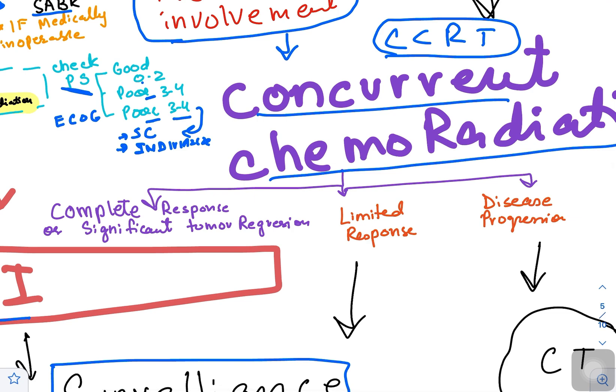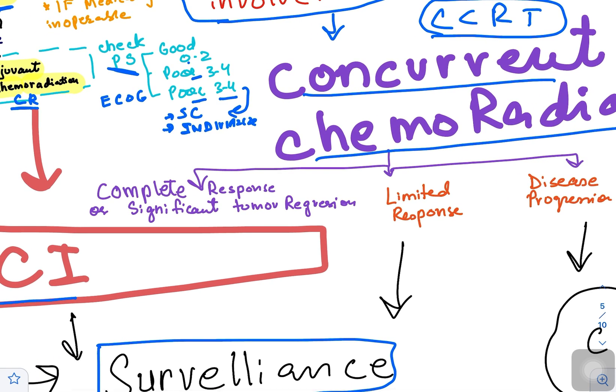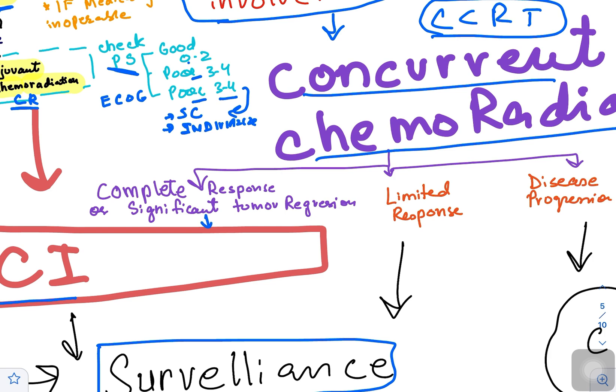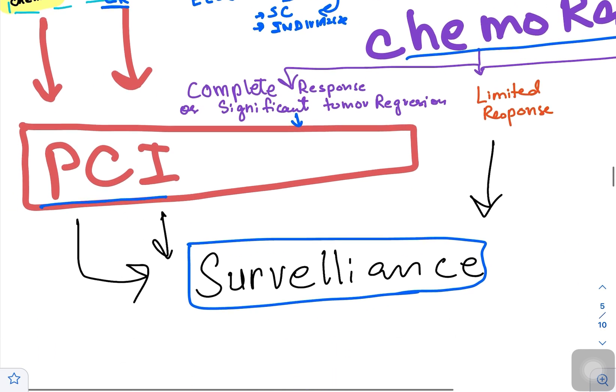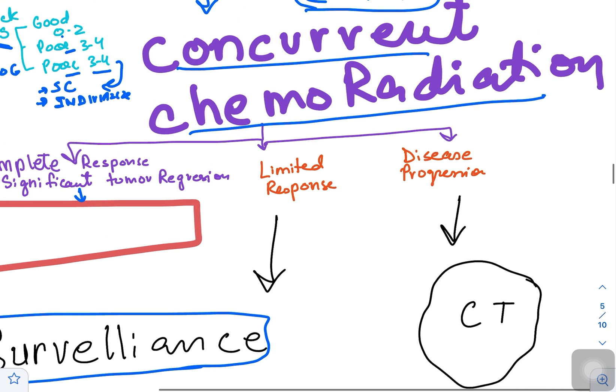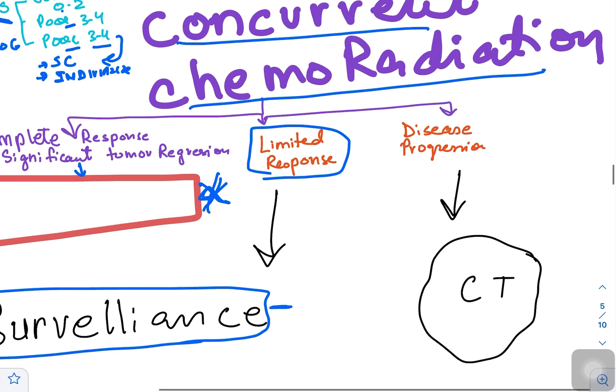If CCRT is working and there is complete response or significant tumor regression, send the patient for PCI and keep under surveillance. If limited response after CCRT, keep under surveillance. If disease progression, send for second-line chemotherapy or enroll the patient in clinical trials.